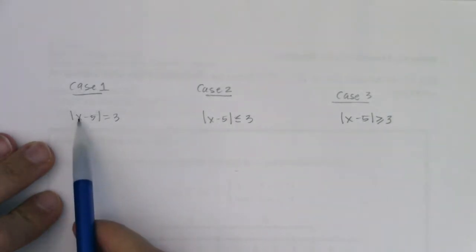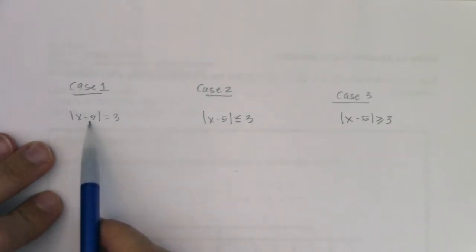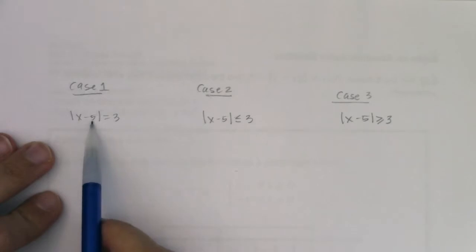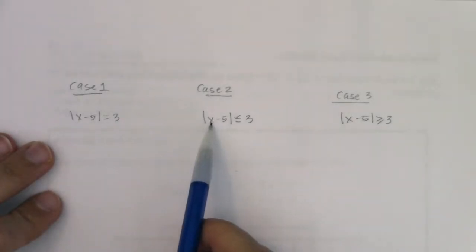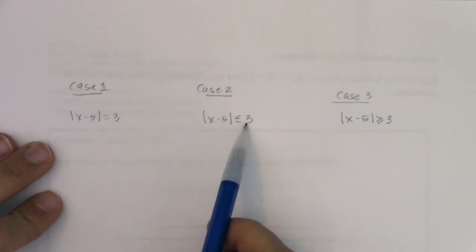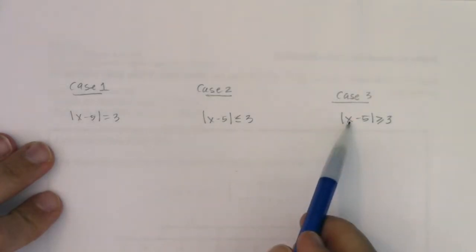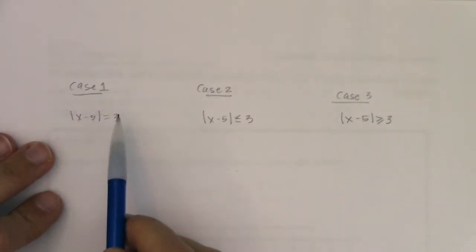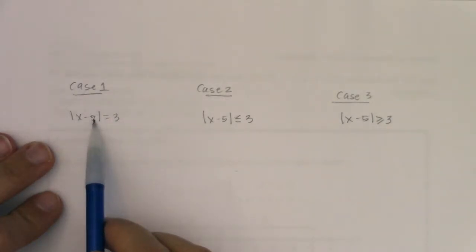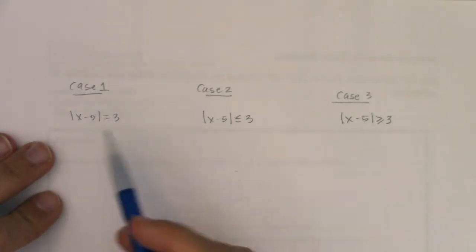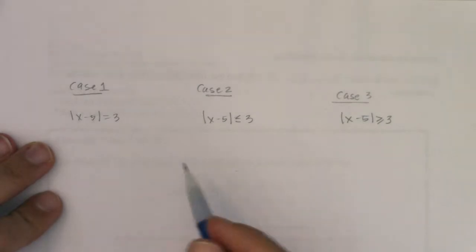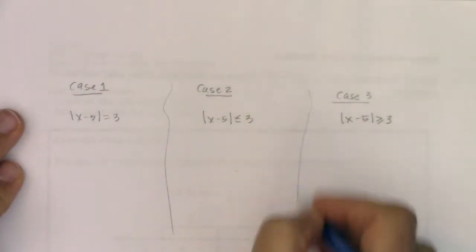What this is talking about is: what numbers are three units away from five? The distance between x and five — when is that exactly equal to three? When is the distance between x and five less than or equal to three? When is the distance between x and five greater than or equal to three? To find the distance between two values, we subtract them. The reason we put them in absolute value is because we don't care if that distance is right or left of the number line.